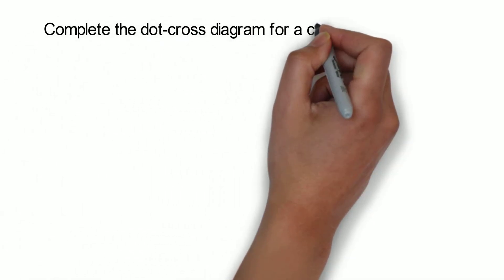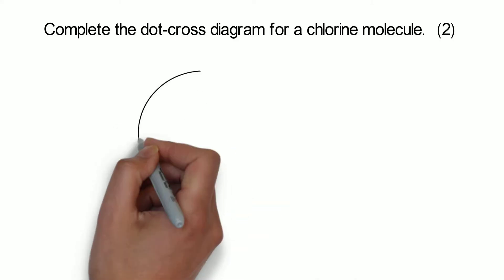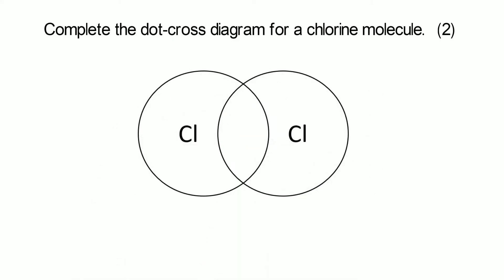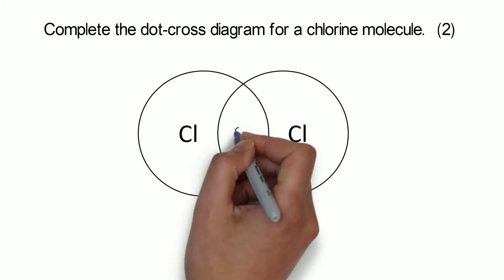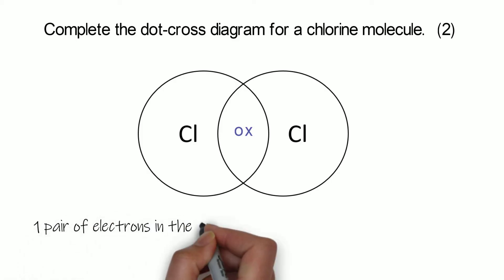So let's start with chlorine — complete the dot cross diagram for a chlorine molecule. We draw our two chlorine atoms, a bit like a Venn diagram, and we need to figure out how many bonds they will make. Chlorine is in group seven, so it needs to gain one extra electron, so it's going to form one covalent bond. To show that, we draw a dot and a cross.